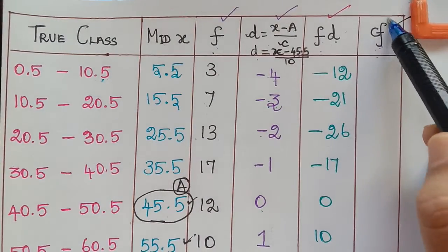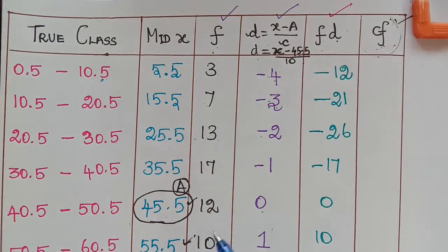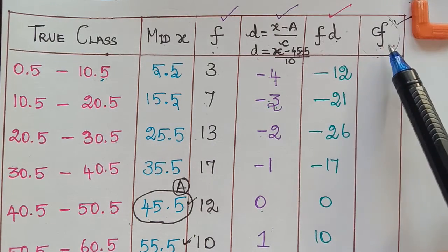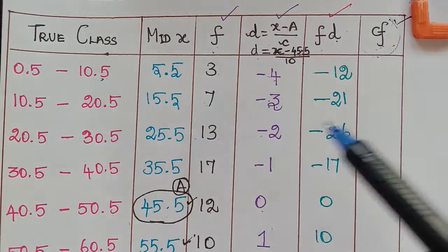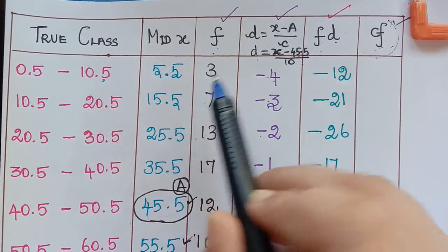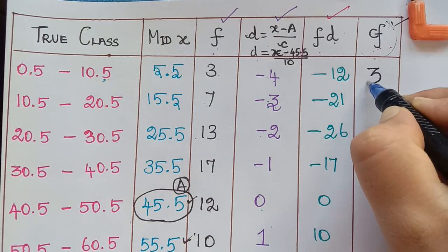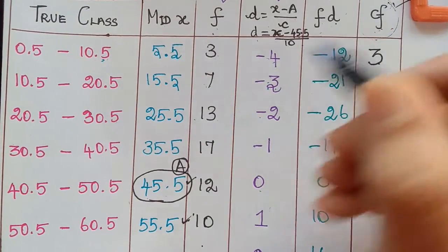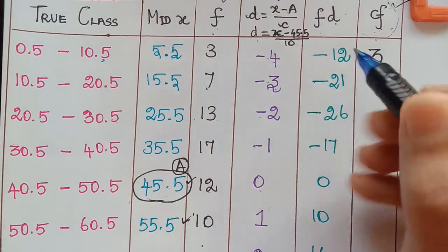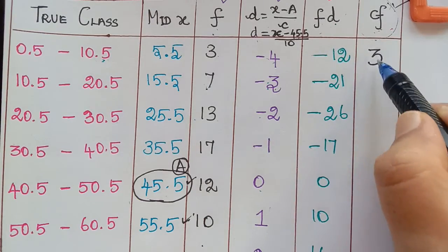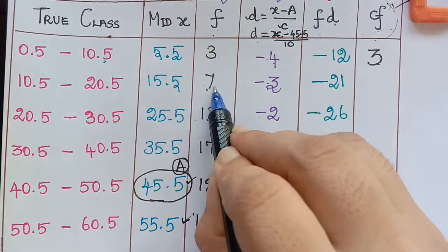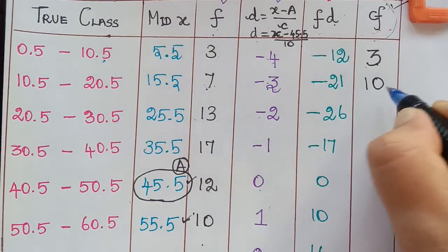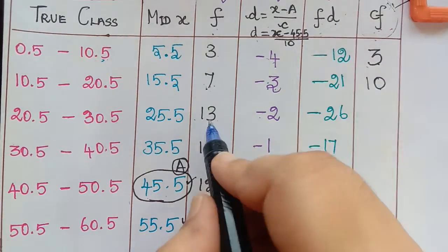To find the median, we should first find the cumulative frequency for the given data. The cumulative frequency for the first class is 3, so this 3 will come as it is. The next cumulative frequency will be 3 plus 7 — we add the cumulative frequency with the frequency of the next class interval, which is 7, so 3 plus 7 equals 10.